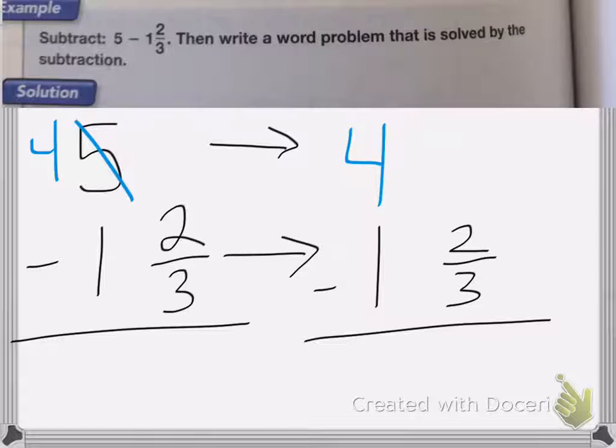Now I have to figure out what fraction I'm going to turn that one whole that we borrowed into. So when we decide what fraction that'll be, we look at the fraction that is given to us. So our denominator is in thirds. We will want to write our fraction in thirds so we can easily subtract.